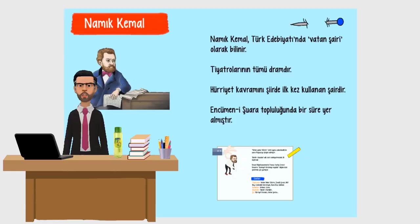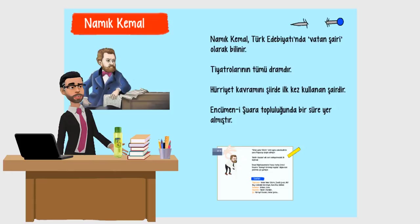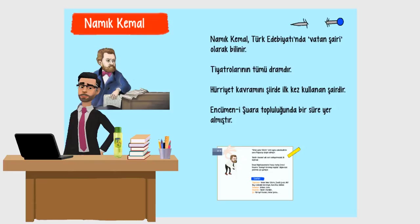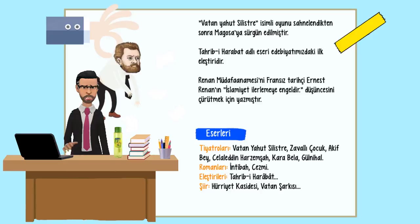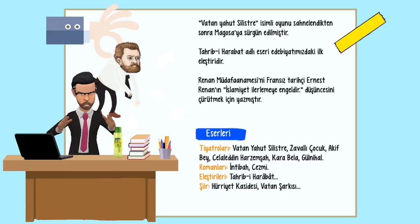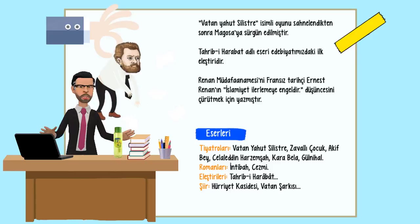Şimdi ise Namık Kemal'i tanıyalım. Namık Kemal, Türk Edebiyatı'nda vatan şairi olarak bilinir. Tiyatrolarının tümü dramdır. Hürriyet kavramını şiirde ilk kez kullanan şairdir. Encümen-i Şuara topluluğunda bir süre yer almıştır. Vatan yahut Silistre isimli oyunu sahnelendikten sonra Magosa'ya sürgün edilmiştir. Tahrib-i Harabat adlı eseri edebiyatımızdaki ilk eleştiridir. Renan Müdafaanamesi'ni, Fransız tarihçi Ernest Renan'ın 'İslamiyet ilerlemeye engeldir' düşüncesini çürütmek için yazmıştır.